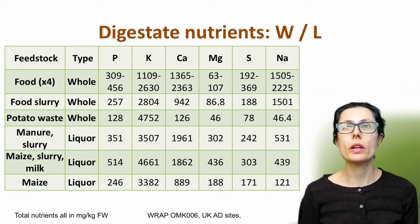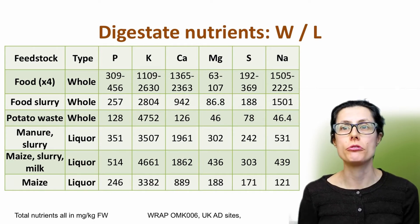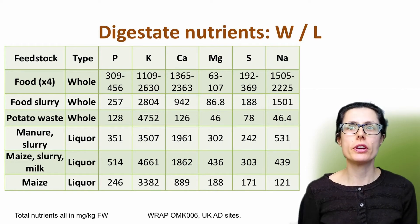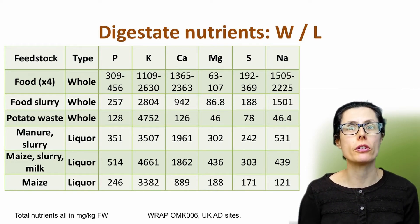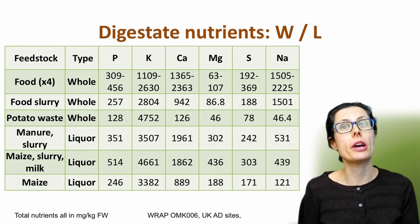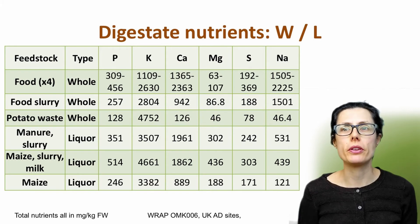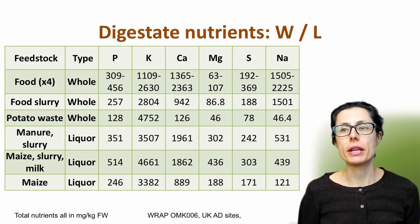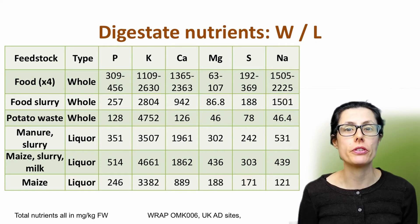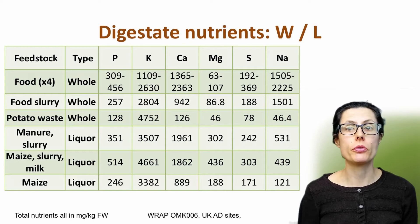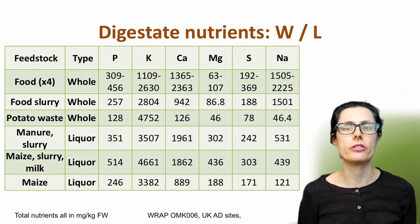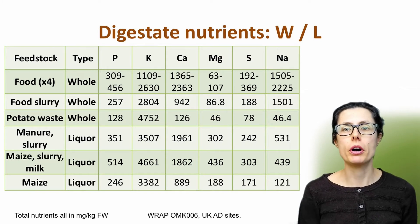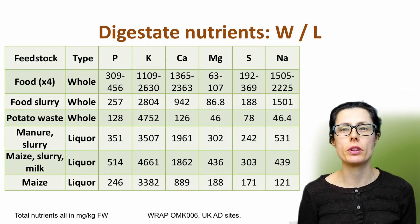Whole and separated liquor digestates contain useful plant nutrients in variable amounts. The nutrients contained in the feedstock will generally be in the same proportions as the resultant digestate — so what comes in, comes out. The top row shows the range of four different food waste digestates, the same ones seen in the graphs earlier. The amount available to the crop following application will vary, with generally at least half of the phosphate and a bit more of the potassium being available. Calcium, magnesium and sulphur are also important plant nutrients and are contained in the digestates. Sodium is much higher in the food waste digestates due to the salt content within the food, as shown in the electrical conductivity data.